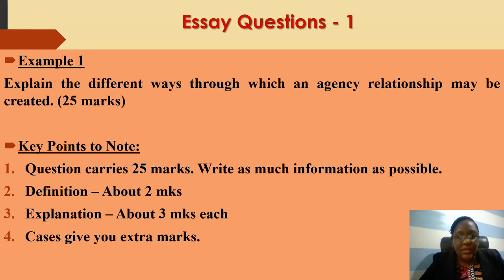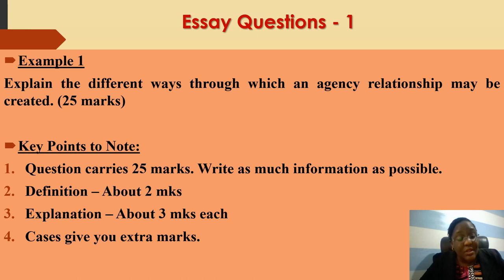Now let's talk about essay questions. Here is one example picked randomly: 'Explain the different ways through which an agency relationship may be created.' Each essay question carries 25 marks — you usually answer four questions in the exam and each carries 25 marks. When answering an essay question, write as much as possible. The definition usually earns about two to three marks, so please give a definition first.